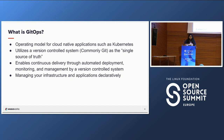GitOps is an operating model for cloud-native applications such as Kubernetes, though I want to highlight that it's not just for Kubernetes — you can still use GitOps with multi-cloud infrastructure. Since we're focusing on Flux, we'll be talking about Kubernetes. It utilizes a version-controlled system, most commonly Git, as the single source of truth. It enables continuous delivery through automated deployment, and it allows you to manage your infrastructure and applications declaratively.